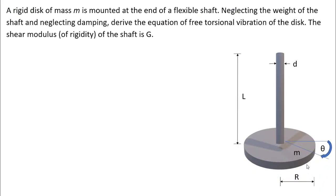The next example is torsional vibration. We have a rigid disk of mass m mounted on a flexible shaft of diameter d. Neglecting the weight of the shaft and damping, we must derive the equation of free torsional vibration. The shear modulus of rigidity of the shaft is G. We can treat the shaft as massless — it just offers stiffness — while the disk has distributed mass. This is an undamped free vibration system involving torsional (angular) motion.